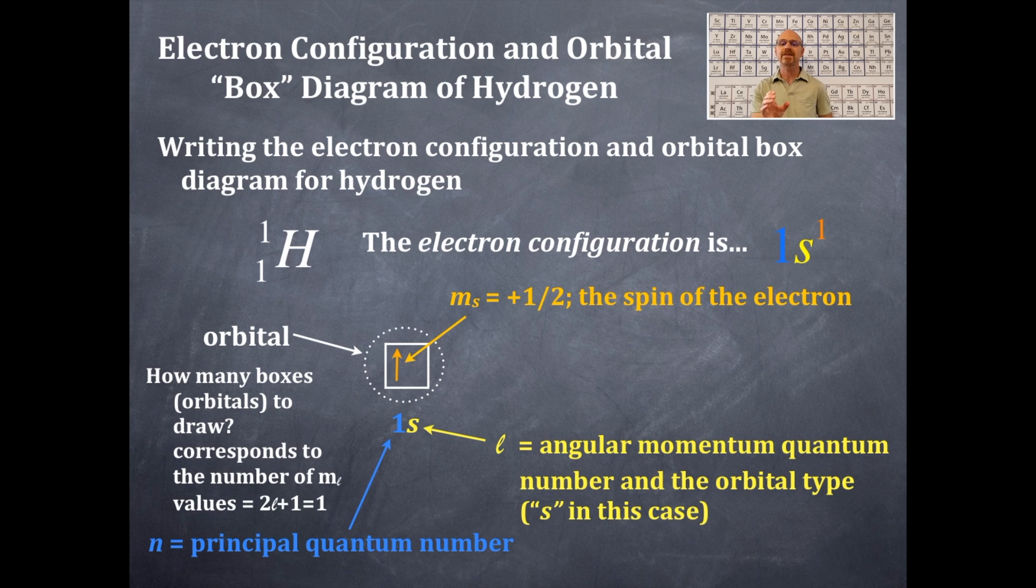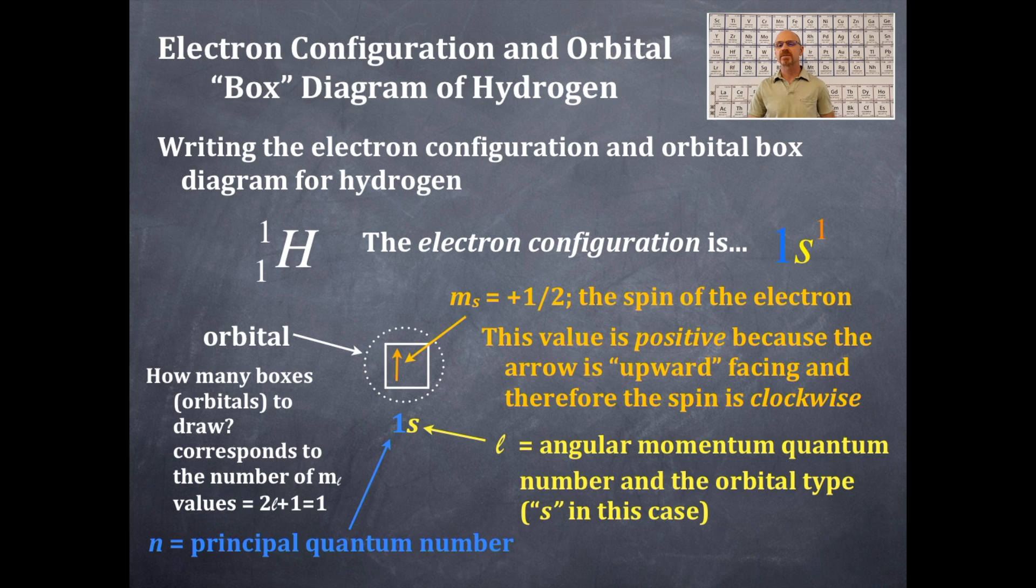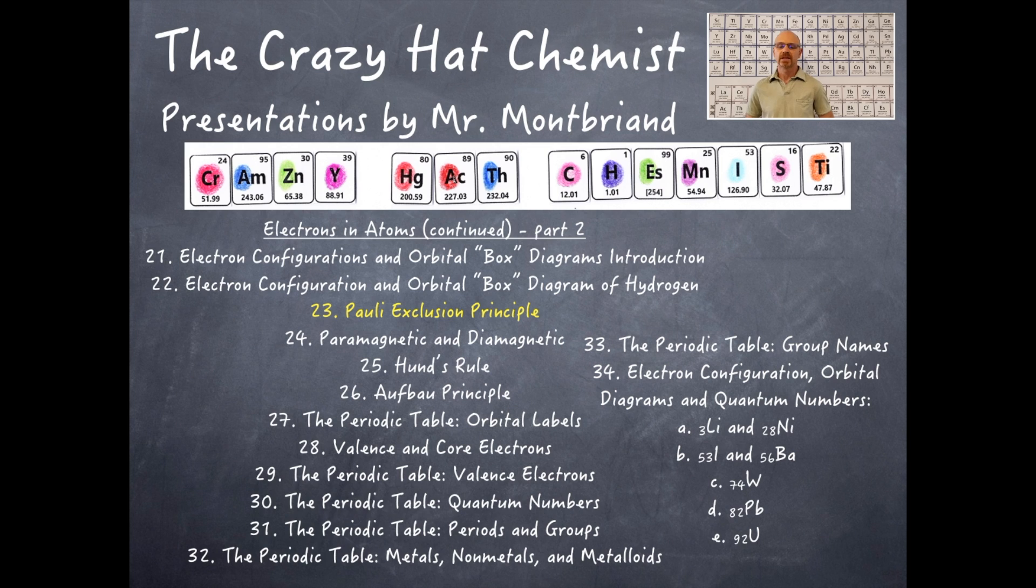So the orbital box diagram is essentially really that box, the 1s labeling underneath, and then that orange arrow facing up. This value corresponds to an upward facing, which is a clockwise spin. I already mentioned that before. So now we have the electron configuration and the orbital box diagram. The electron configuration is 1s1. And the orbital box diagram is that single box with it labeled underneath as 1s and then the single orange arrow facing upward.